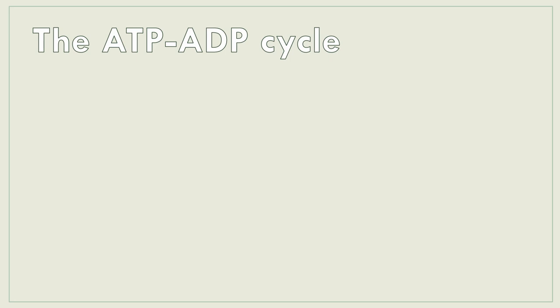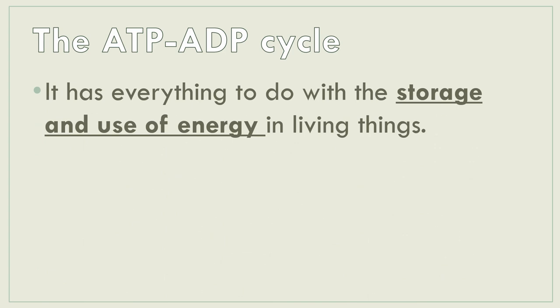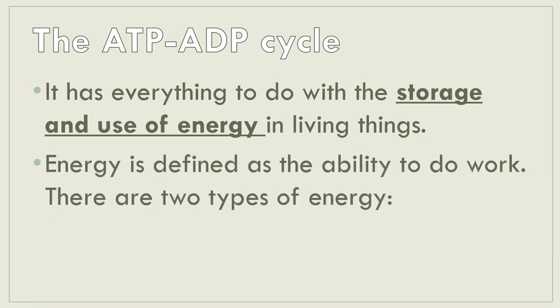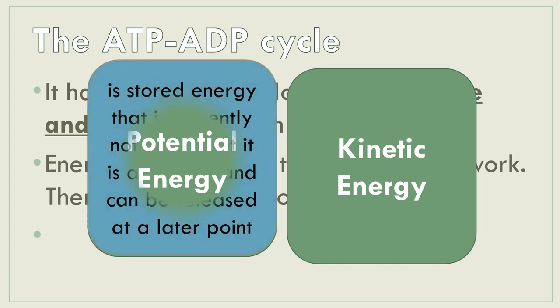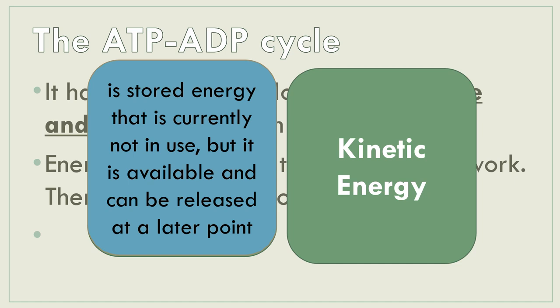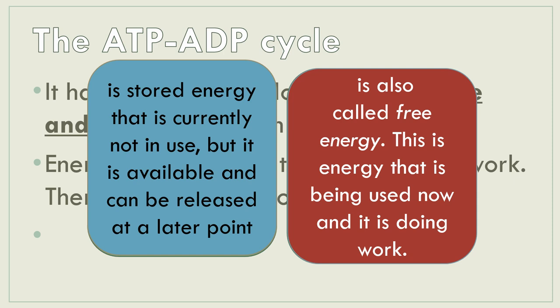So what is the ADP-ATP cycle? It can be called the ADP-ATP cycle interchangeably. It has everything to do with the storage and use of energy in living things — we can store or use energy. Energy is defined as the ability to do work, and there are two types: potential energy and kinetic energy. Potential energy is stored energy that is currently not in use — it is energy at rest, but it is available and can be released at a later point. Kinetic energy, on the other hand, is free energy — the energy at work that is being used now.